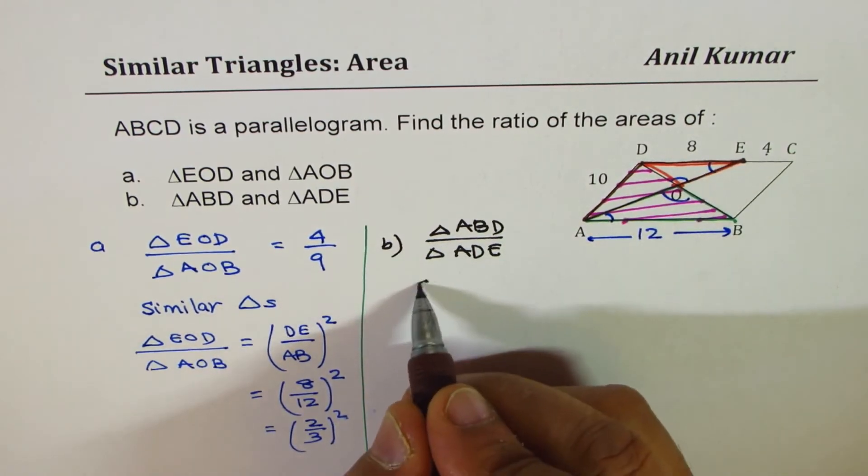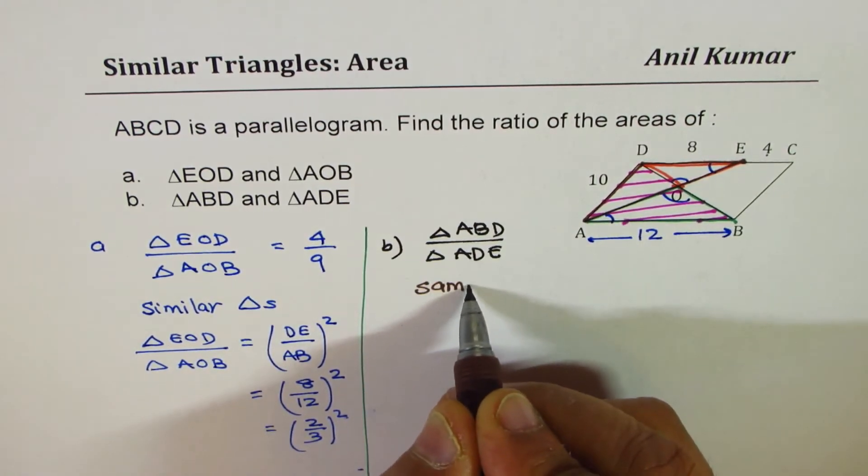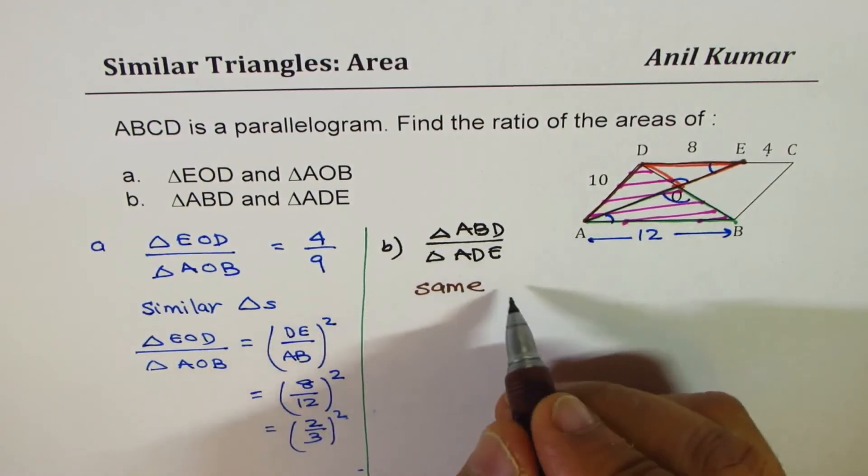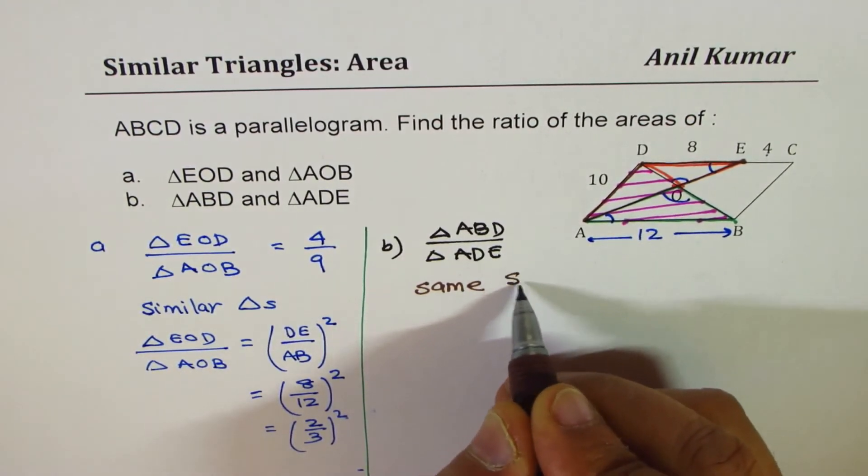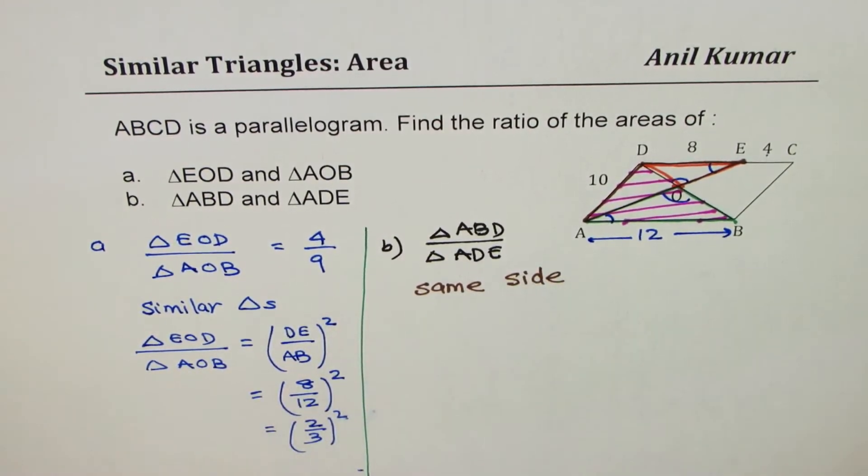So as soon as you get same side, we know it is ratio of sides, area, same side, or you can say common side, correct?